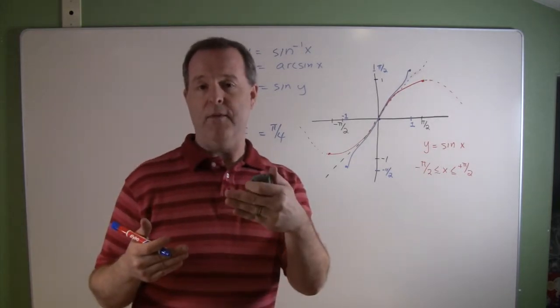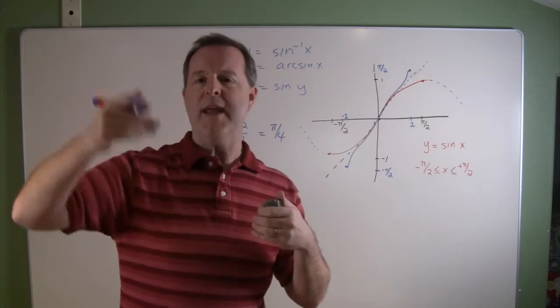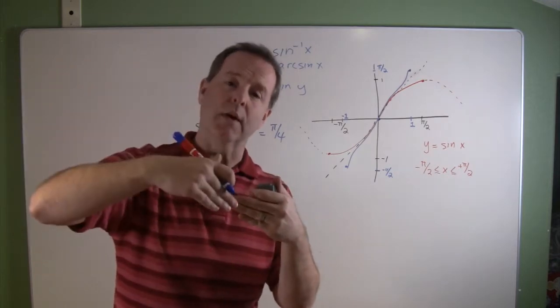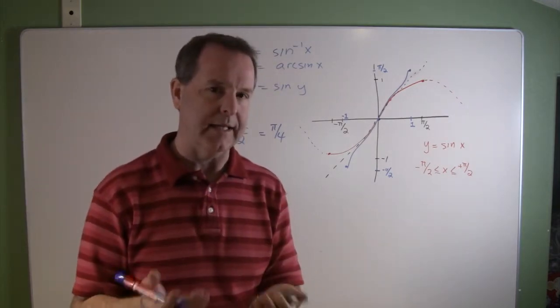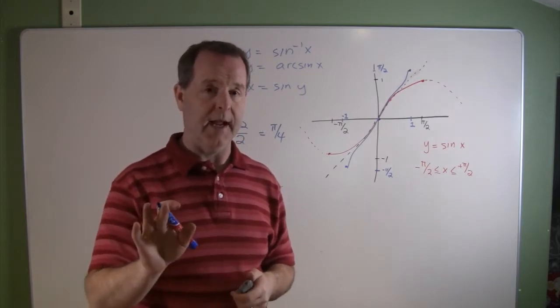So we're kind of thinking about sines just from the other direction. Before we found we had the angle and we wanted to find its sine. Now we have its sine, we want to go backwards and find out whose angle it is. And that's what an inverse function does in this particular case.